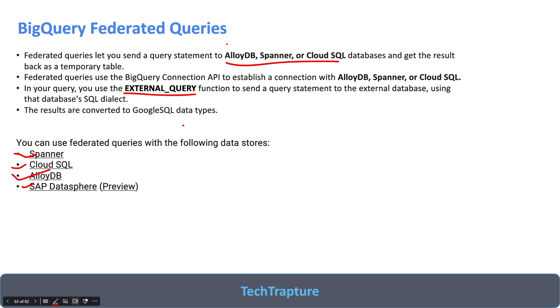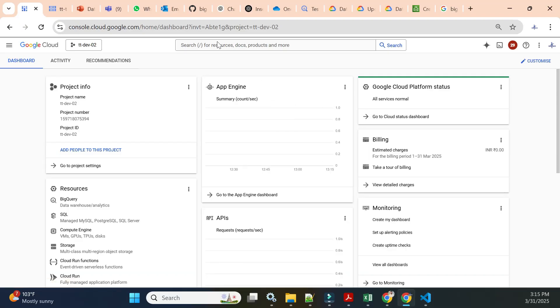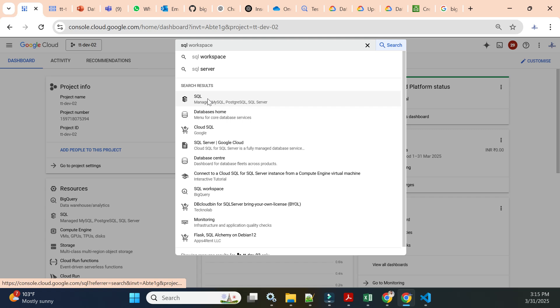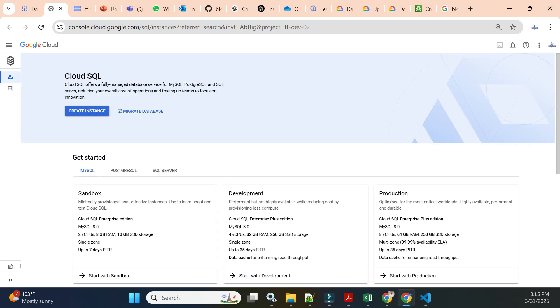Now let's go to the Cloud Console and see how we can create a federated query. First we need a Cloud SQL instance, so we'll quickly create one Cloud SQL instance, create a dummy table in it, insert some data, and then create a connection in BigQuery to connect to that Cloud SQL data. I'm now in my Google Cloud Console. I will open Cloud SQL and create one sample database using the MySQL engine.